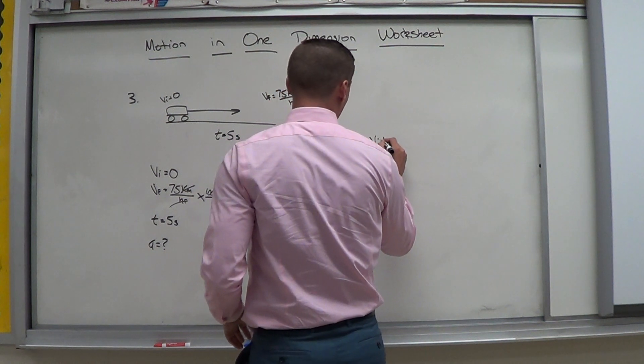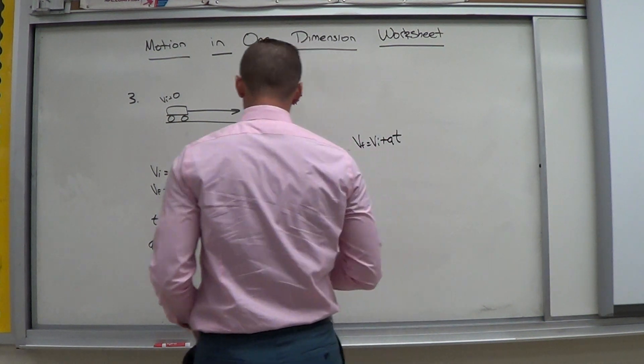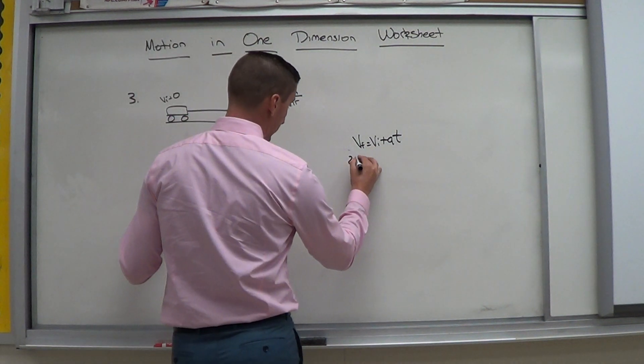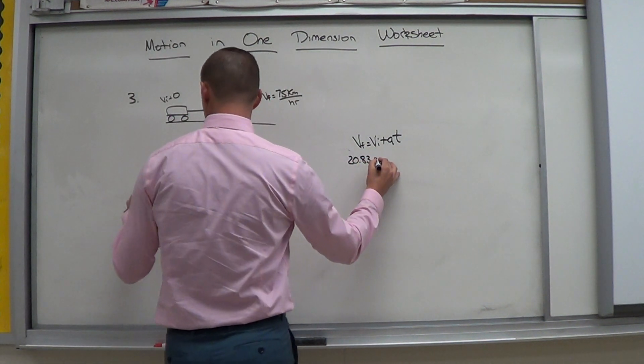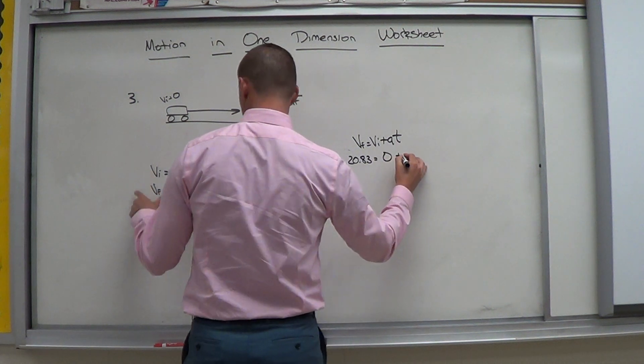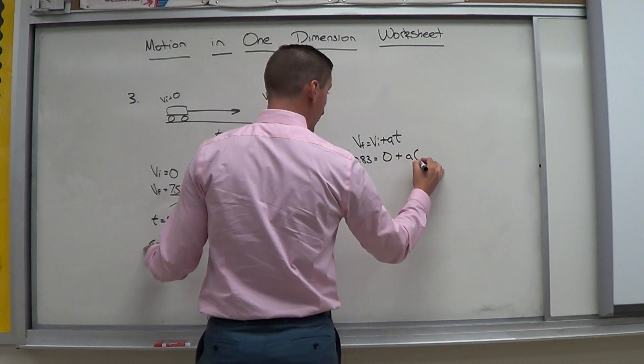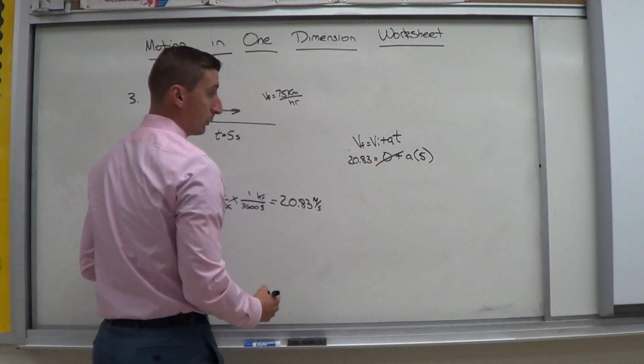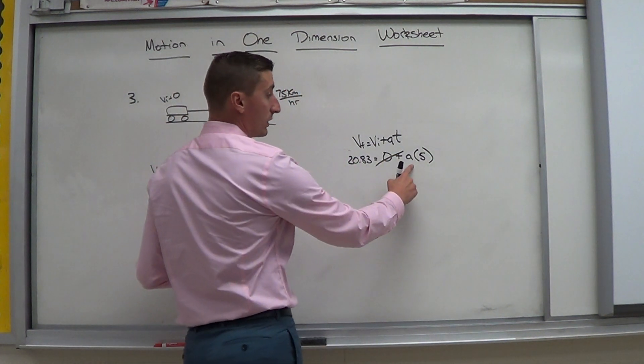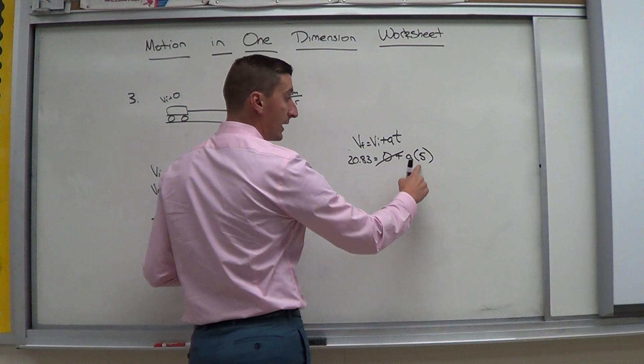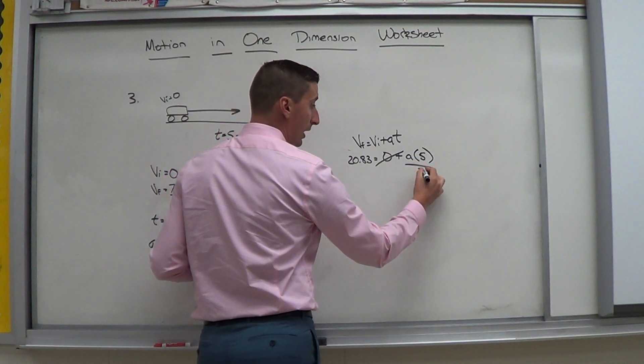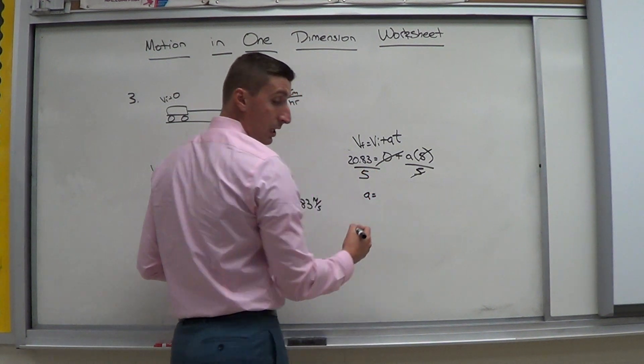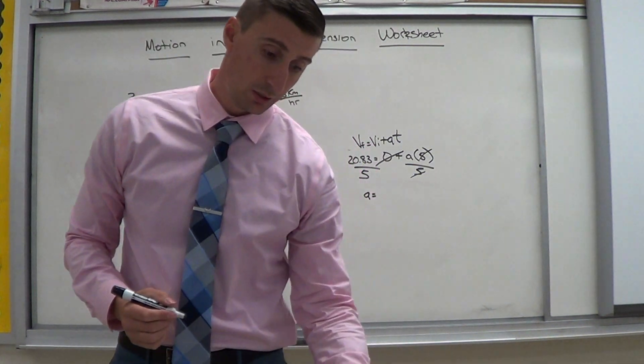Vf equals vi plus a t. I can plug in now. Vf is 20.83. Vi is zero. Plus a t. Five. So that zero goes away. Doesn't really come into effect here. So if I want to solve for a. I need to move the five to the other side. So I divide by five. Divide by five. And the acceleration that I get when I solve this is.